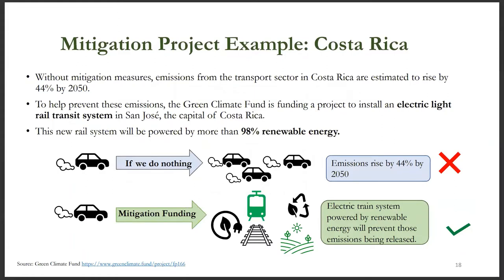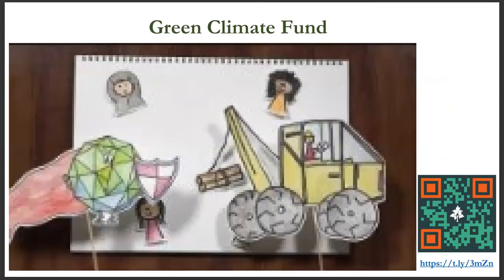Without mitigation measures, emissions from the transport sector in Costa Rica are estimated to rise by 44% by the year 2050. To help prevent these emissions, the Green Climate Fund has funded a project to install an electric light rail transit system in San Jose, the capital of Costa Rica. This new rail system will be powered by more than 98% renewable energy. Please use the QR code or website link at the bottom right of the screen to watch a short YouTube video on the Green Climate Fund.